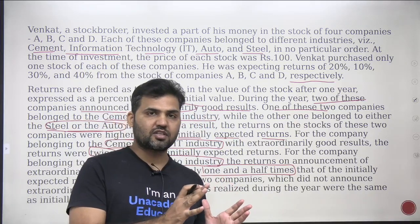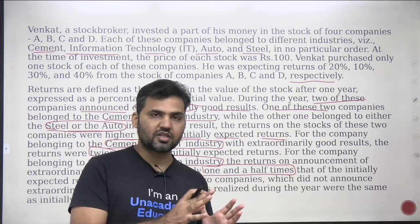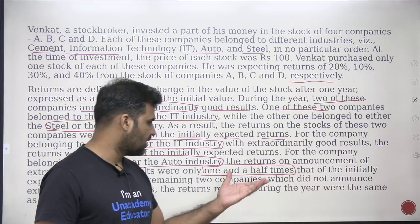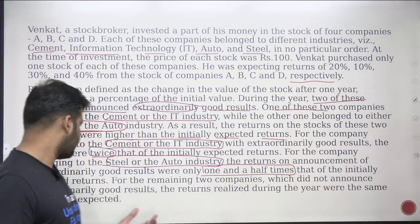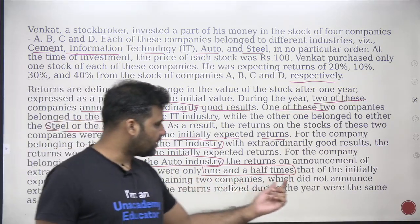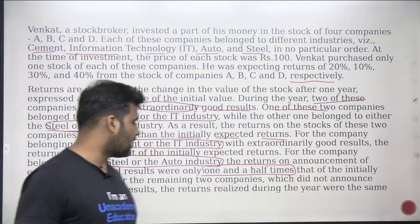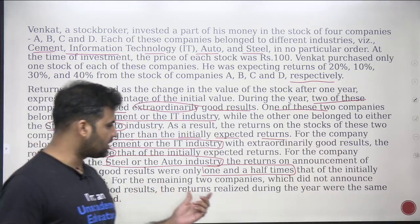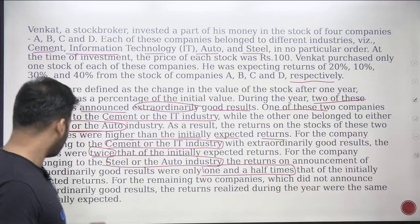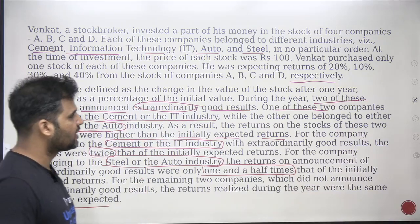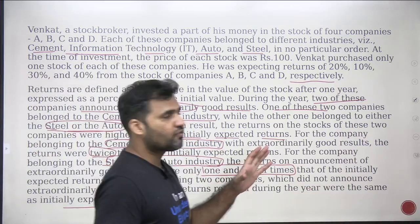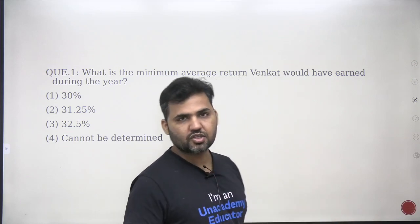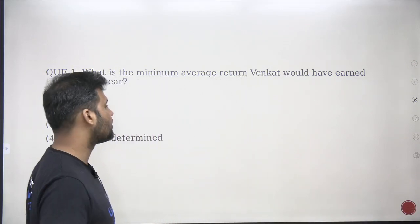If the earlier company was giving 10%, now 1.5 times of 10% is 15%. For the remaining two companies which did not announce extraordinarily good results, the returns realized during the year were the same as the initially expected returns. So once you understand the story, try to make a basic structure of it — that helps in solving the questions.